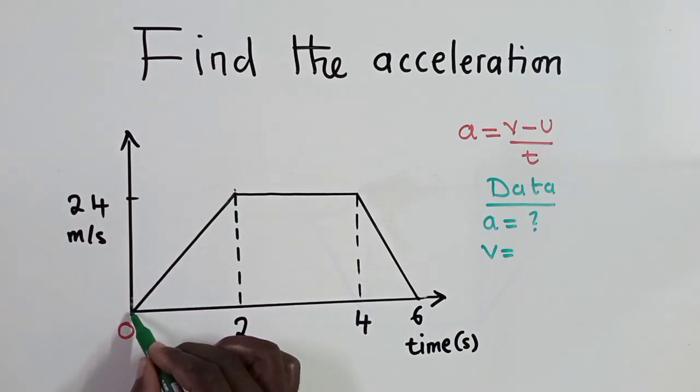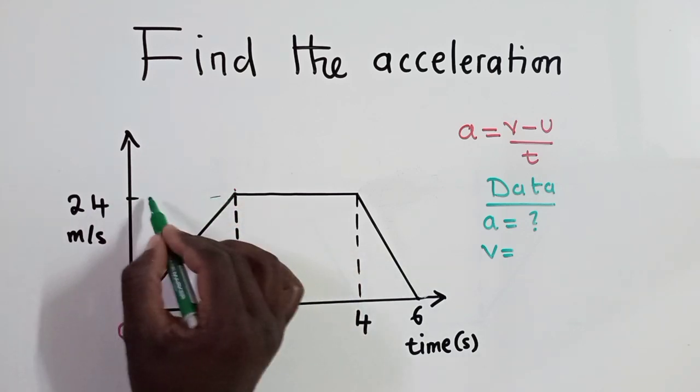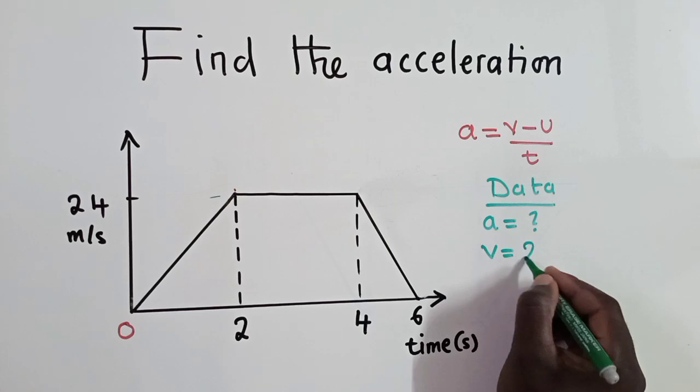So look, acceleration, it was accelerating, going upwards, upwards, up until it reached here. So this is where the final velocity is. So when you reach here, this point, just look at the velocity this side. It's 24.